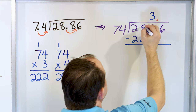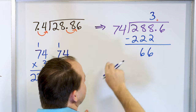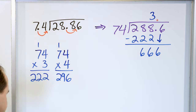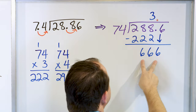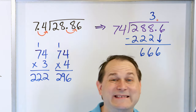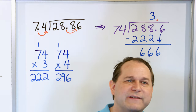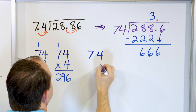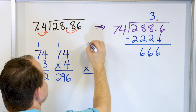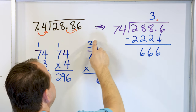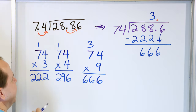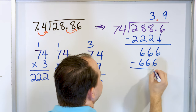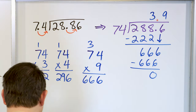After I subtract, I drag the next digit down, so I have 66 followed by the next digit — giving 666. Now, 74 times what is 666? I know that 74 times 10 is 740 — that's too big. So let's try multiplying by 9: 9 times 4 is 36, carry 3; 9 times 7 is 63, plus 3 is 66. So 74 times 9 is exactly 666. It can go 9 times. 9 times 74 is 666, which gives a leftover of 0. So the answer we get is 3.9.